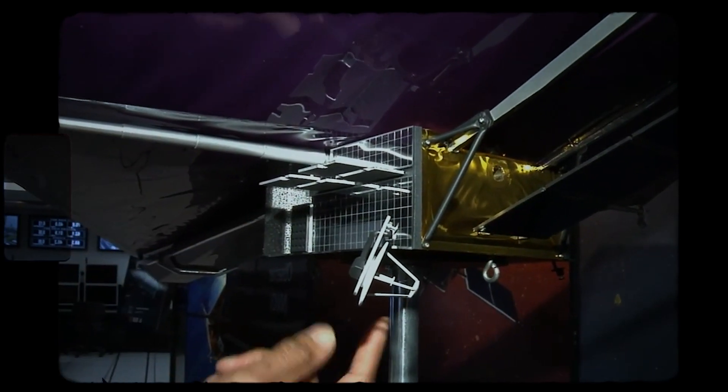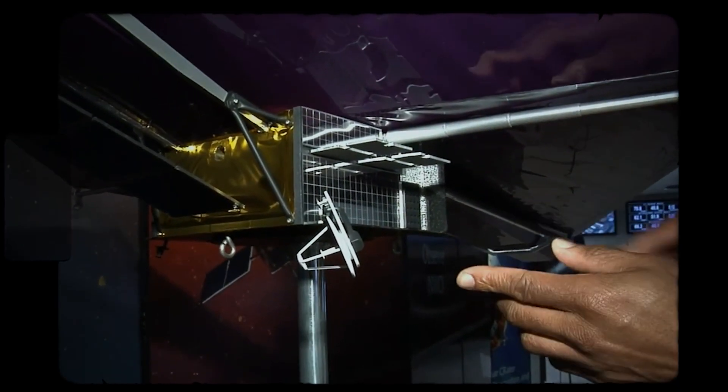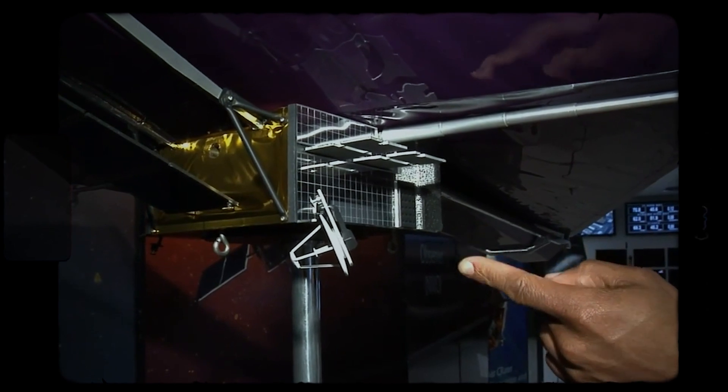The electronics that we will be testing actually is located underneath in the spacecraft compartment there. And that is responsible for sending all the data down to Earth and back up to Earth, controlling the satellite.